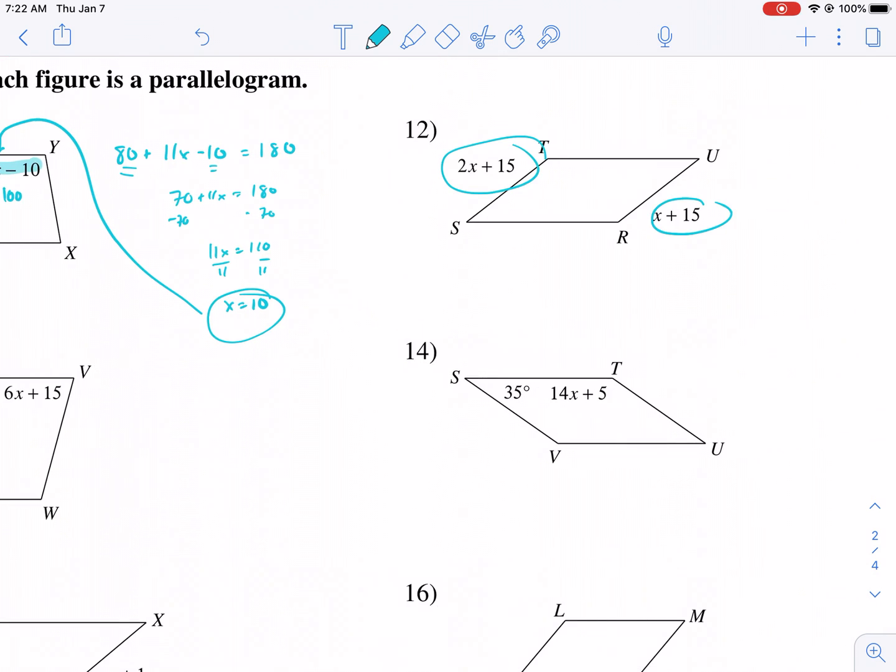This one, these are two congruent sides, because if these are parallelograms, then they're congruent, so 2x plus 15 is equal to x plus 15. And we should get minus x from both sides. We get x plus 15 equals 15. And we're going to get x equals 0. So x equals 0 for number 12.